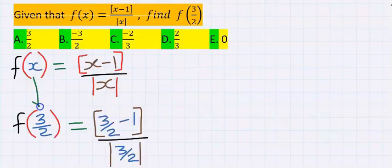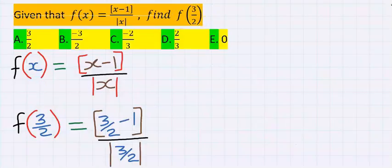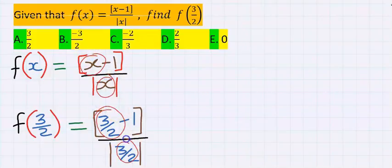Wherever you see x, you replace it with 3 over 2 as given in the question. Hence, instead of x at the numerator, I got 3 over 2. And instead of x at the denominator, I got 3 over 2.